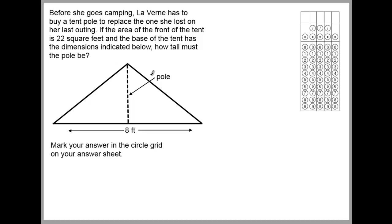This one might not be too obvious at first because it's not immediately clear. So what we do is find out what we already know. It says that the front of the tent is 22 square feet, which is another way of saying that the area of this triangle — you can see it's in the shape of a triangle — is 22 square feet. So we know that the area is 22 square feet.